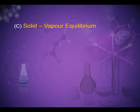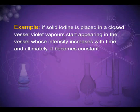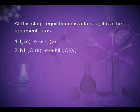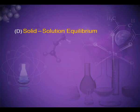The third is solid-vapor equilibrium. This type of equilibrium is attained for solids which undergo sublimation. For example, if solid iodine is placed in a closed vessel, violet vapors start appearing whose intensity increases with time and ultimately becomes constant. At this stage, equilibrium is attained: I₂(s) ⇌ I₂(g). Another example is ammonium chloride: NH₄Cl(s) ⇌ NH₄Cl(g).